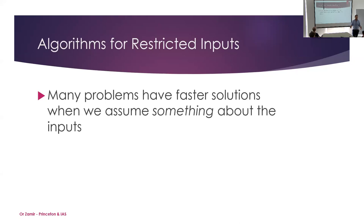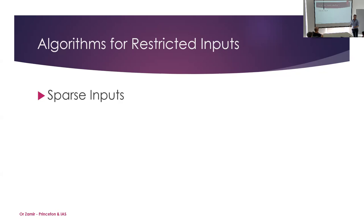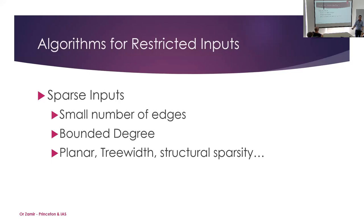Let's start with the easiest one: algorithms, and more particularly, algorithms for restricted inputs. For many different problems, we know that if we assume something about the inputs we can solve the problem faster. What I want to list examples of is what types of restrictions do we usually put on inputs to make problems easier. One very common restriction is sparsity — for graphs this can mean not having a lot of edges, having bounded degree, or structural sparsity like being planar or having bounded treewidth.